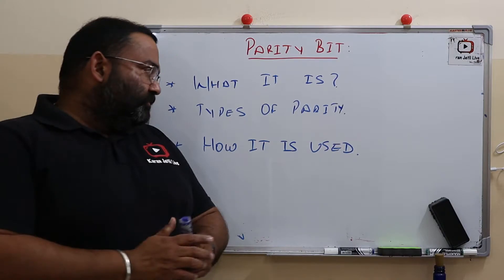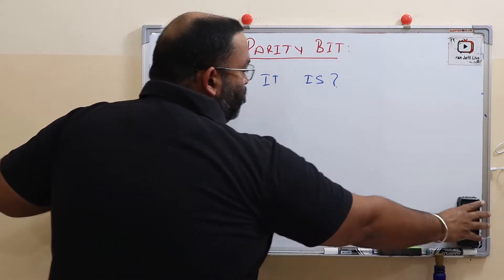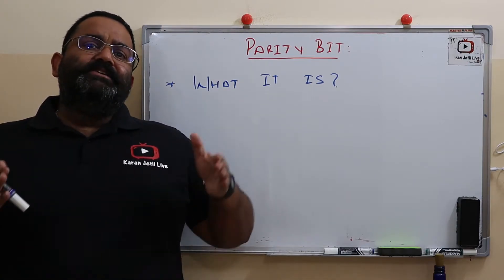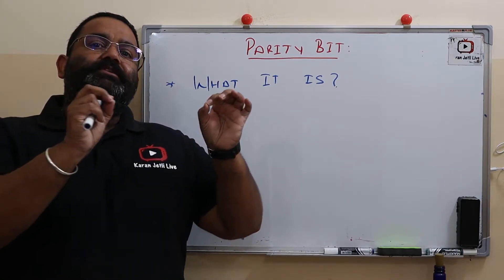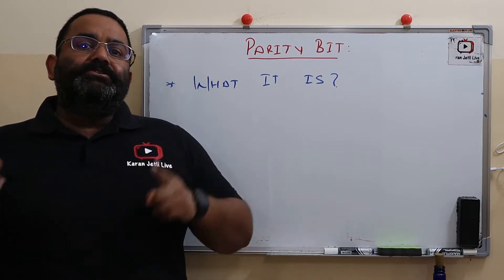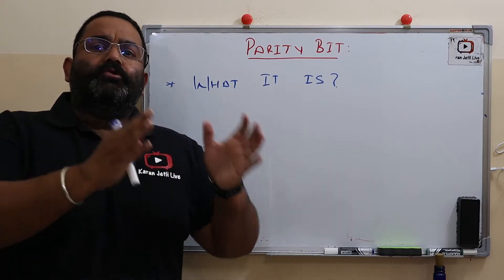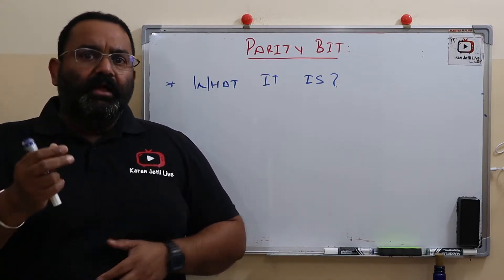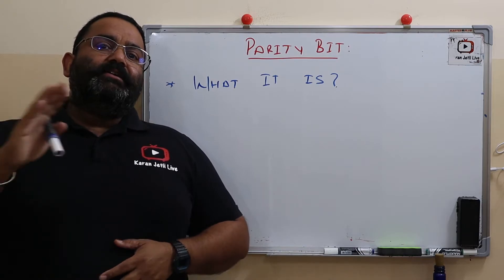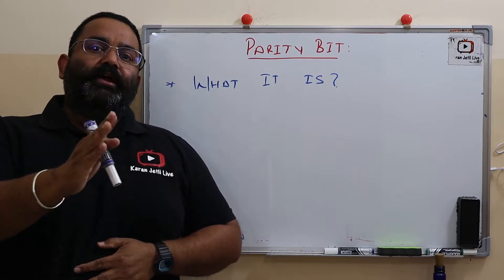So what is a parity bit? A parity bit is an additional bit which we attach with our data that is being transmitted over our network, to ensure that the data which is received is correct. The receiver of that data can verify whether the data he received is correct or not.